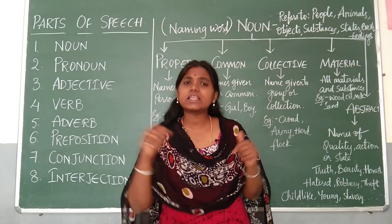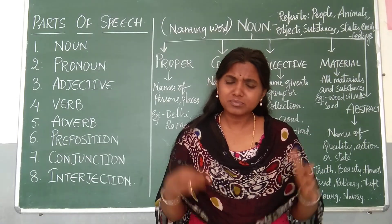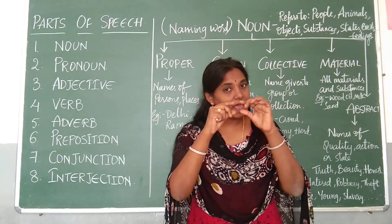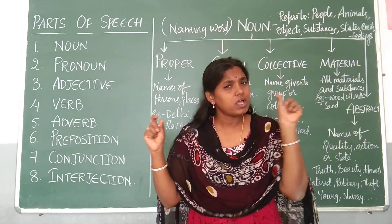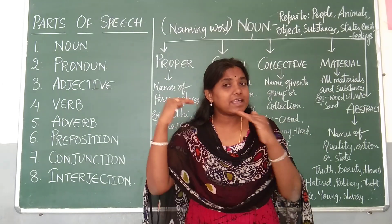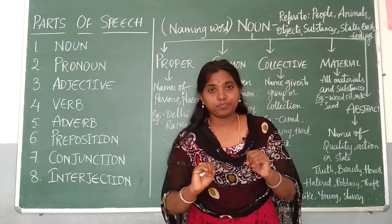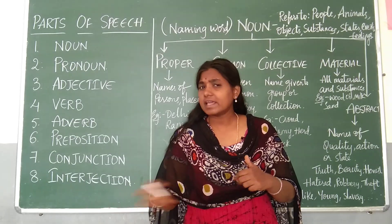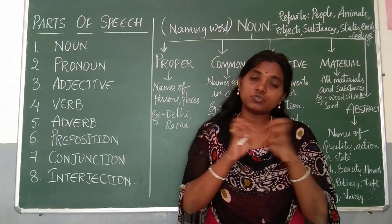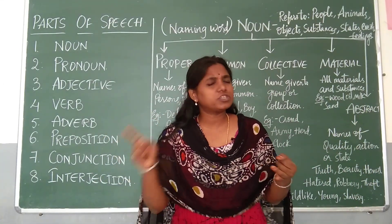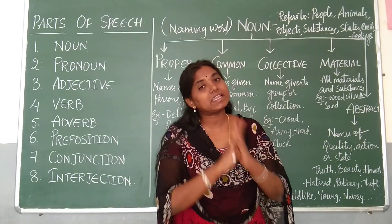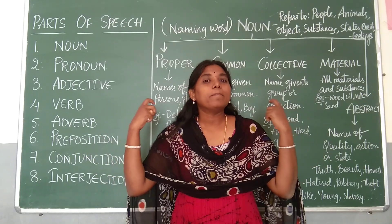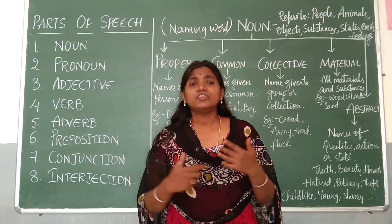Let us first understand the meaning of parts of speech. Let us consider speech as a sentence. This sentence comprises a number of words, and each word is categorized into a part — one word may be a noun, another a pronoun, another an adjective, another a verb, another a conjunction, and there may be an interjection as well. All these words together form a meaningful sentence. We need all these parts of speech to frame a complete, meaningful sentence.